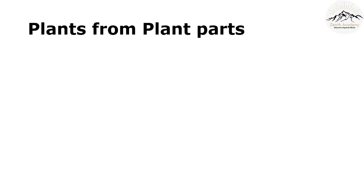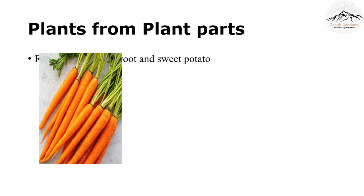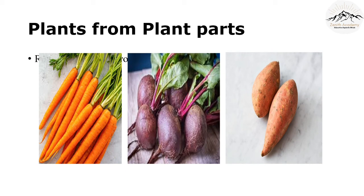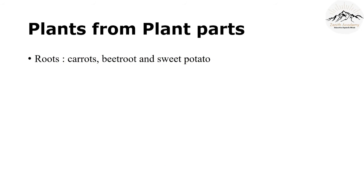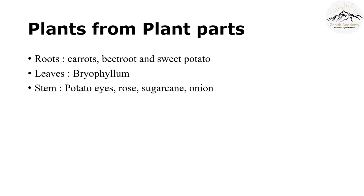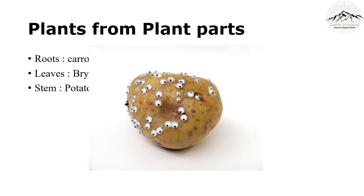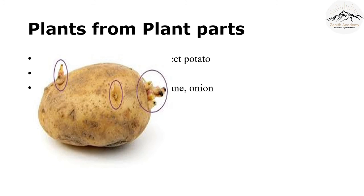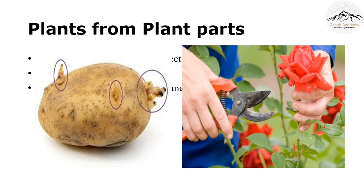Some plants grow from different plant parts. First, roots — carrot, beetroot and sweet potato are all roots, and the shoots growing upwards show that these can be used to grow a new plant. Second, leaves — take a look at bryophyllum, where plants grow along the edges of the leaves and develop into adult plants. Third, stem — potato is actually a stem, and the potato eye can be used to grow a new plant. Even rose stems can be used to grow a new rose plant.